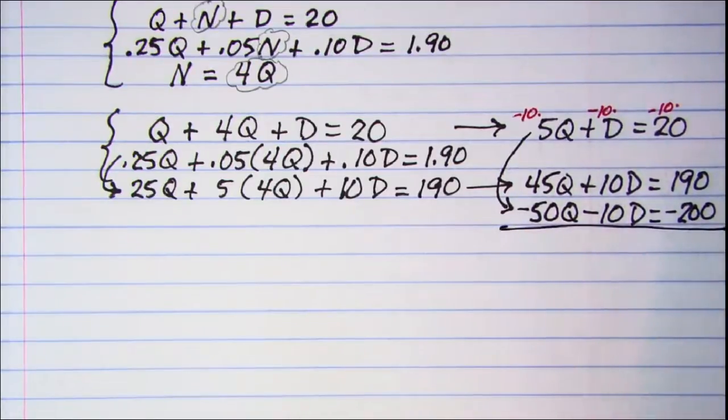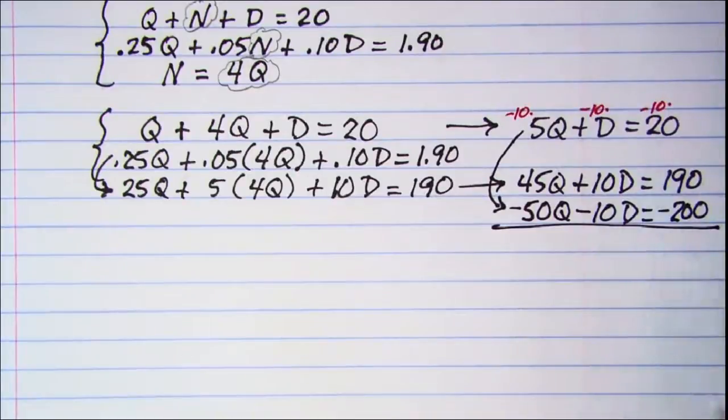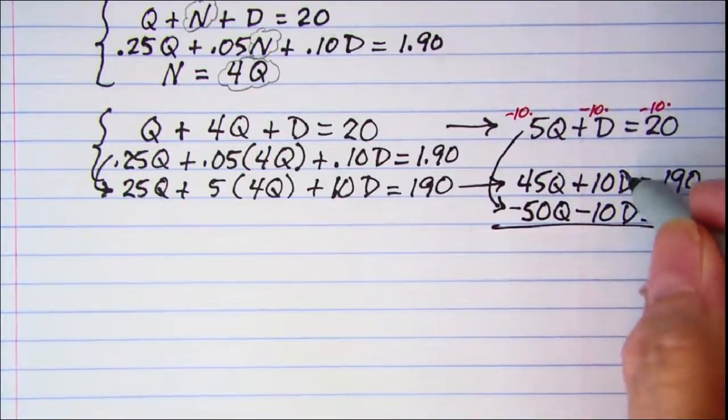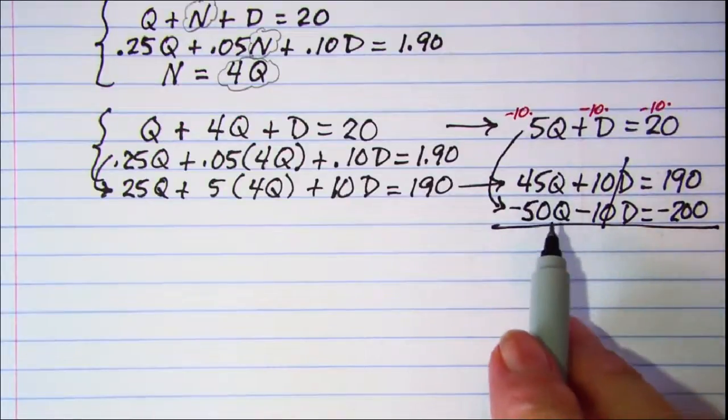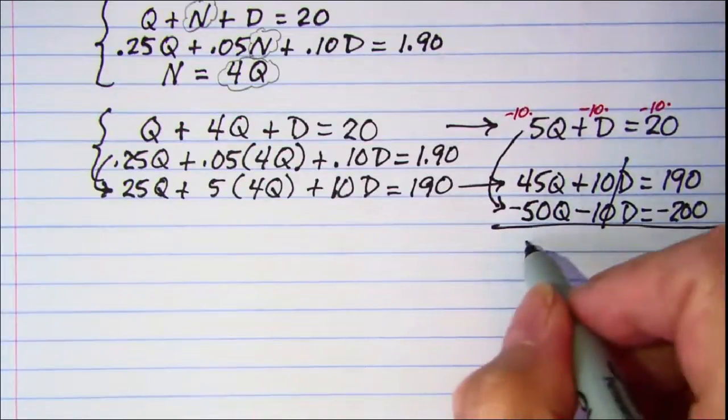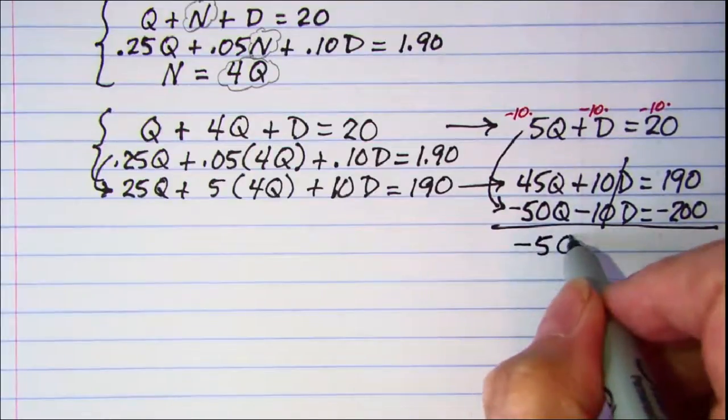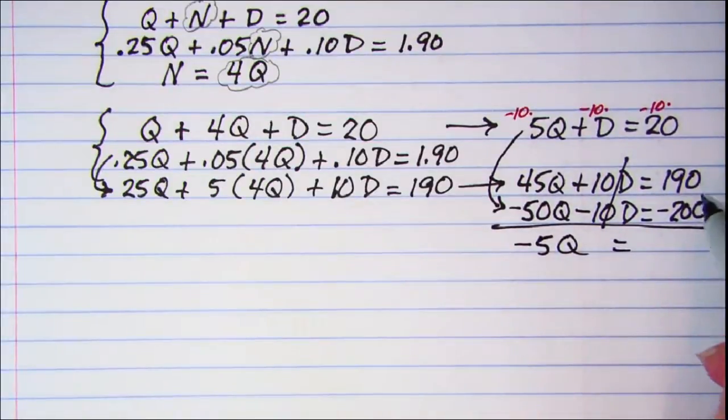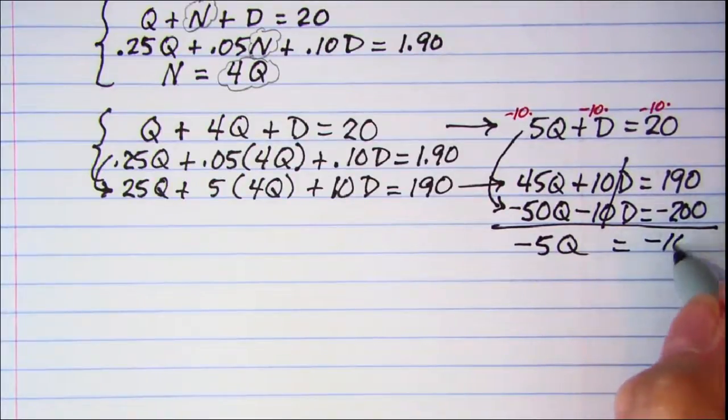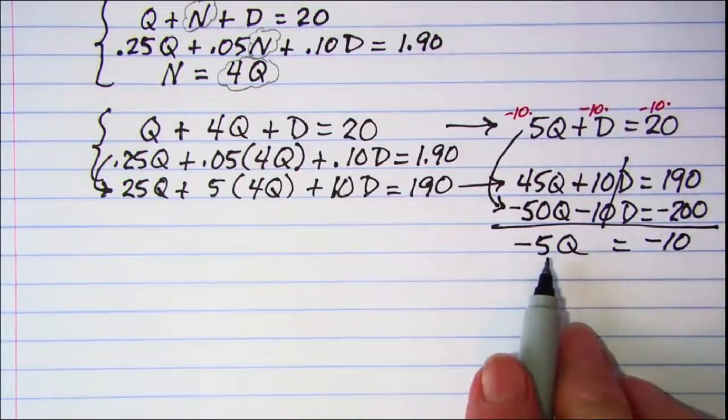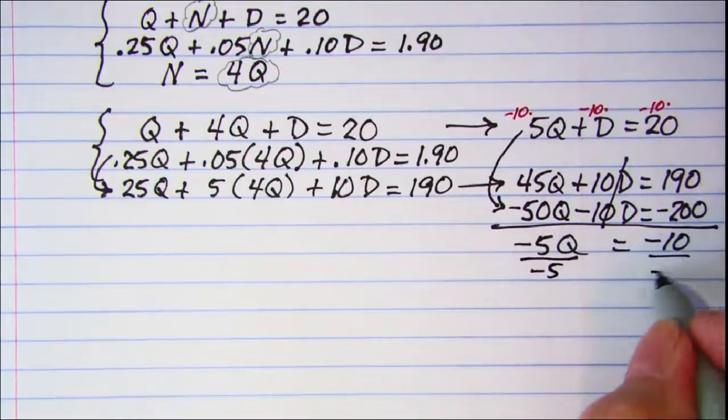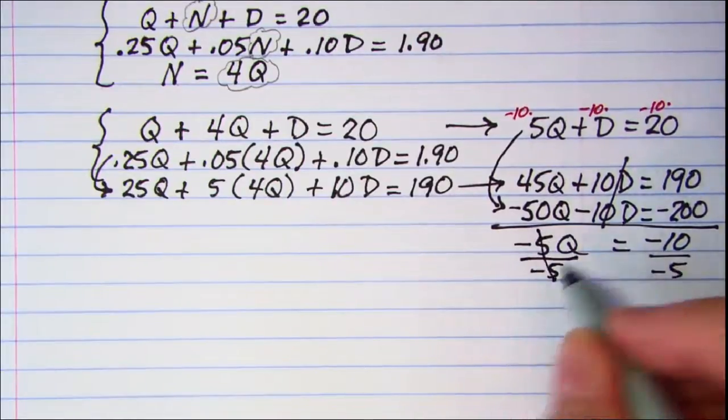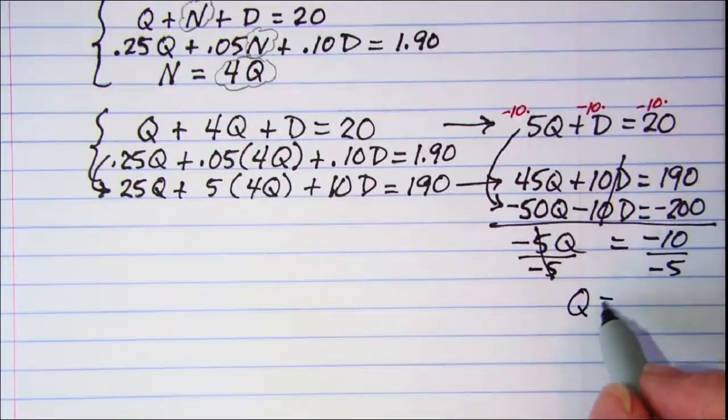Now for elimination, we'll just add these two equations together. These two terms will cancel off, so 45Q and a negative 50Q is a negative 5Q, and then 190 and negative 200 will be a negative 10. Divide both sides by a negative 5, these will cancel, and I have Q is equal to 2.